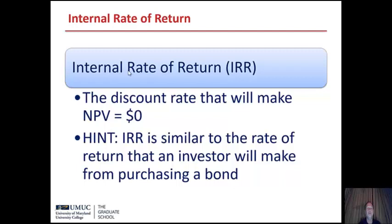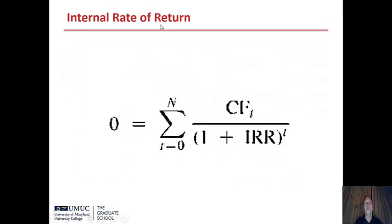Another calculation a company might do is the internal rate of return, which will be in percent. This is the discount rate that will make NPV zero — or the break-even rate of return. It is similar to the rate of return an investor would make from purchasing a bond. The IRR is calculated by iterating, essentially guessing the IRR over and over again until the NPV equals zero, which would take a very long time by hand, but computers with financial calculators or Excel can do very quickly.